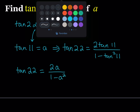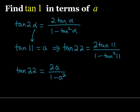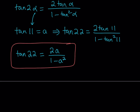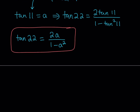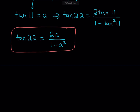We have tangent 22, but we need tangent 1. So we're going to double this again. If you double 22, you get 44. Since we know tangent 22, we can find tangent 44 because 44 is 2 times 22.